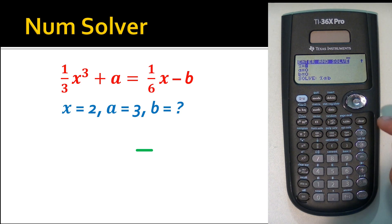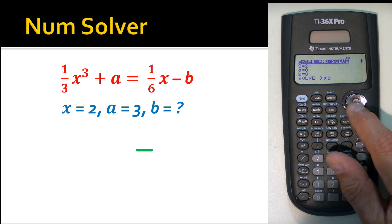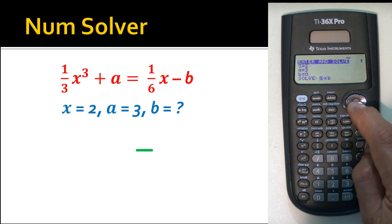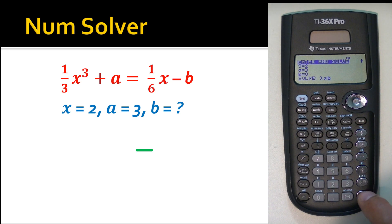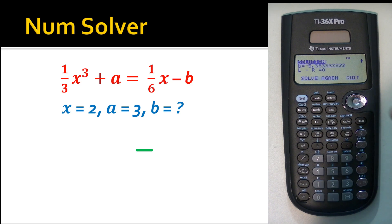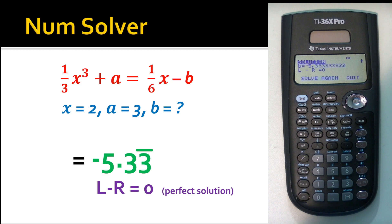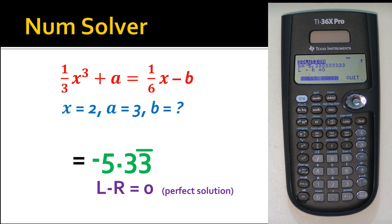Once you hit Enter it will ask for the values. I have x equals two, a equals three — I hit Enter between them. There's no value for b so I leave that one alone. I arrow down to choose what to solve for — x, a, or b — I highlight b and hit Enter. It calculates... 5.3333 repeating. The Casio handles those infinite repeating decimals very well; the actual answer is negative 5.33 repeating, indicated by a bar over the top.